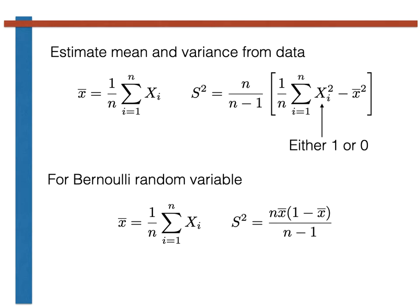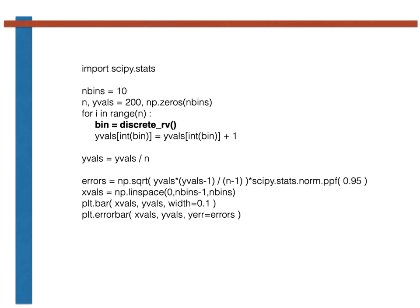With that information in place, we can thus write the code to calculate the error bars on our histogram. This is the code shown here. The first part of this code just calls the function called discrete_rv repeatedly to generate our sample of discrete random variables.